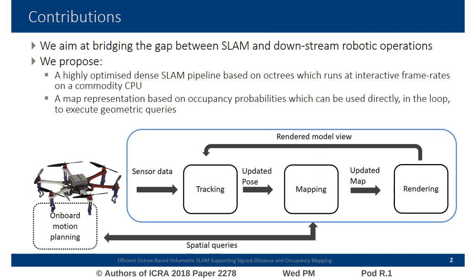The first stage takes as input a raw sensor measurement from a moving agent — in this example a flying drone — and estimates the egomotion relative to the previous time step. The updated pose is then passed to the mapping stage that performs the map update. Finally, a synthetic view of the scene is rendered and sent to the tracking stage to track the agent position against the reconstructed model.